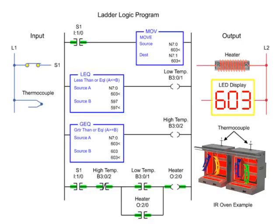Reaching 603 degrees or more, the high temp output is enabled since source A is equal to source B of the greater than or equal to instruction.